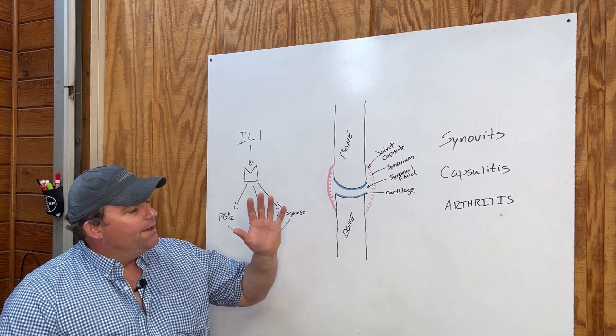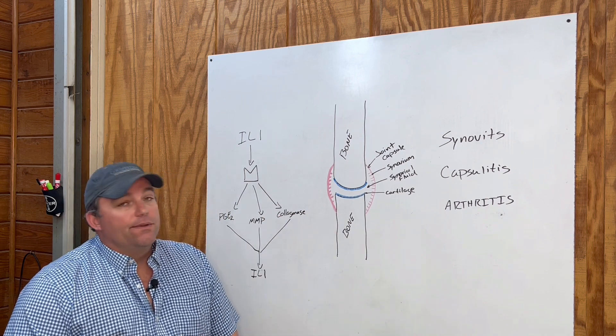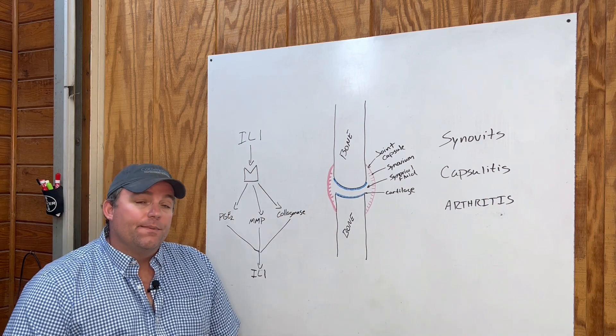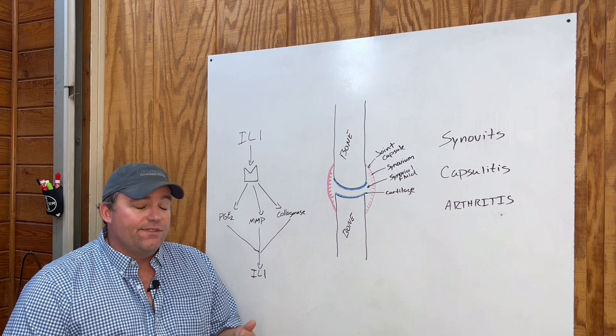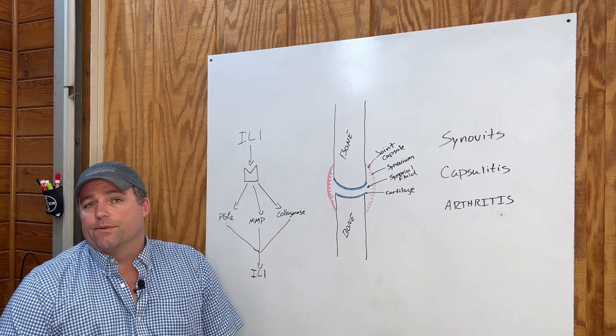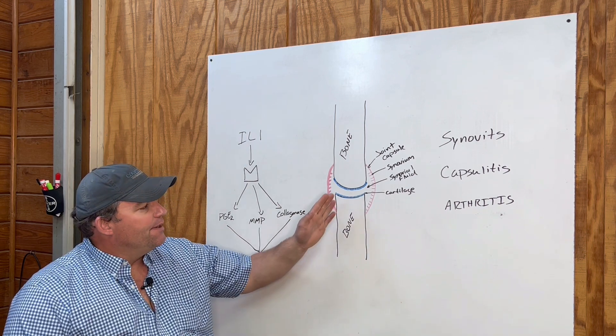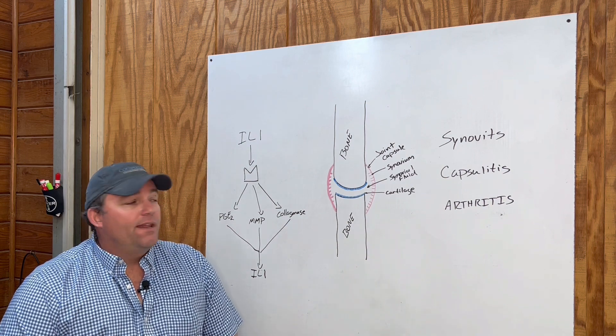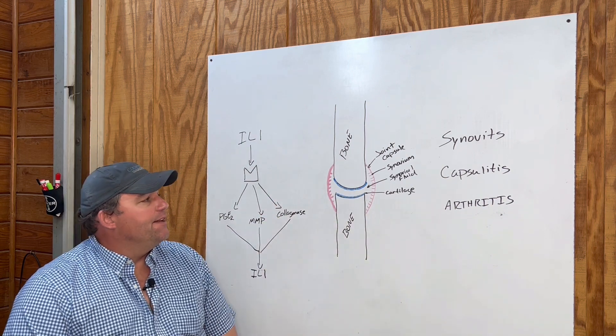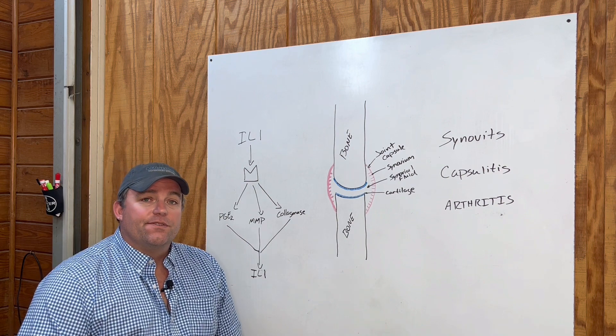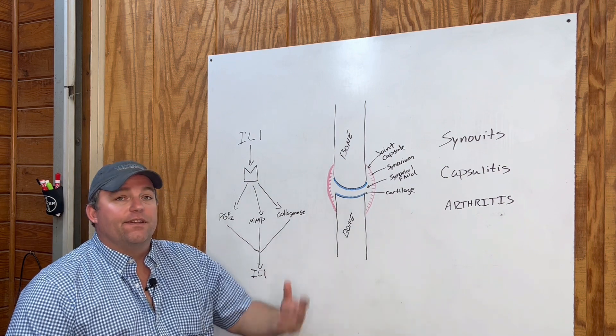I want to start today's video with a discussion on the basics of a joint. Remember, lameness is the number one cause of poor performance in a horse, and the joint is the number one cause of lameness. We're going to do a deep dive into what actually hurts inside of a joint and what makes the joint have an issue.